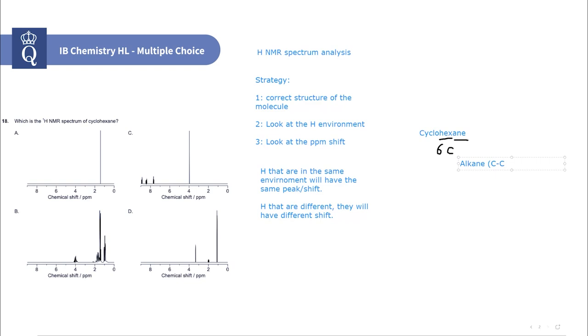Finally, the prefix cyclo means that the structure is a ring. Combining that all together, when we draw it out, it would be a hexagon. That is the structure of cyclohexane.